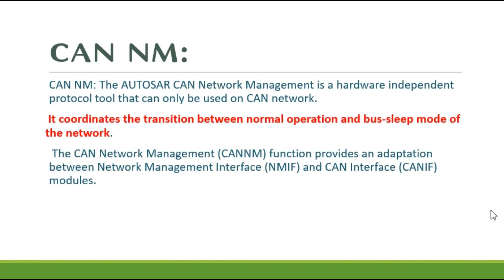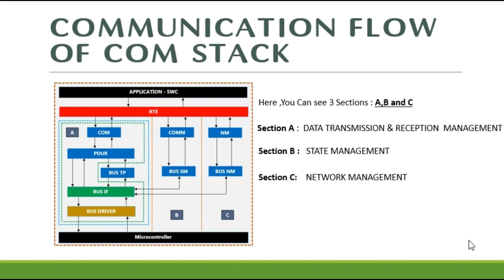CAN network management is a hardware-independent protocol used only for CAN networks. Its main purpose is to coordinate the transition between normal operation and bus sleep mode of the network. It manages normal operation and bus sleep operation. The CAN network management function provides the adaptation between AUTOSAR NM interface (NMIF) and the CAN IF module.